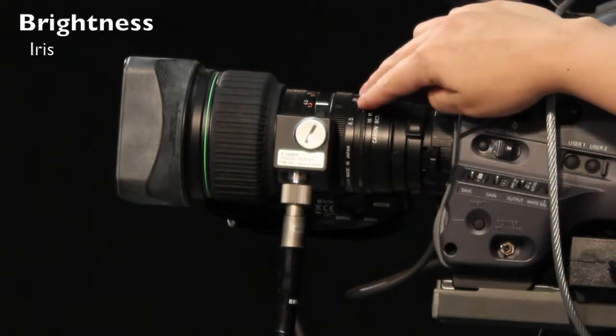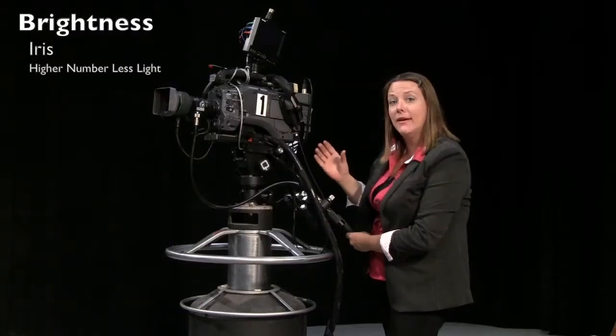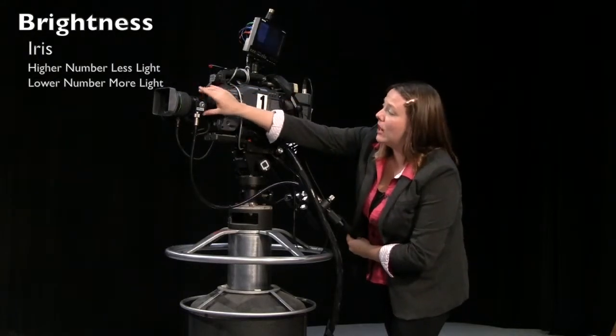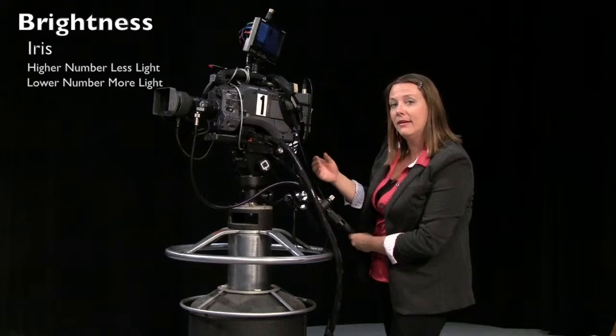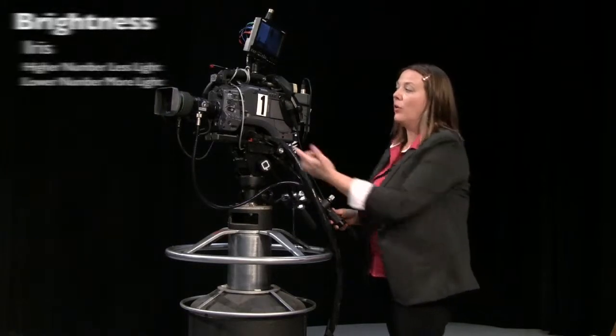And as you close it down to a higher number, such as an f-stop of 16, you're reducing the amount of light that comes in. And when you open it up to say an f-stop of 2.8, you're letting more light into the camera. Once you learn how to control the brightness, the last step is learning how to manually white balance.